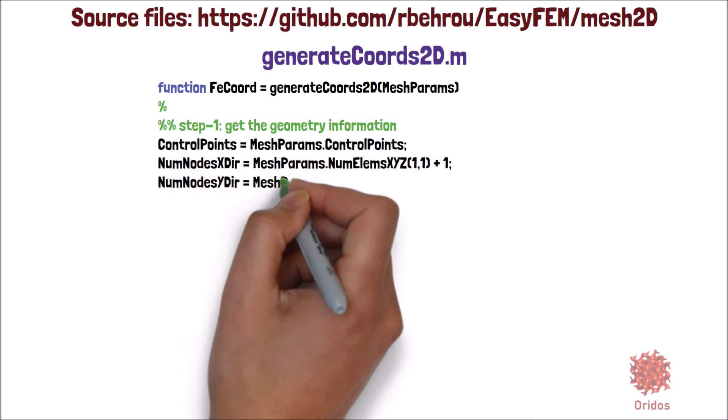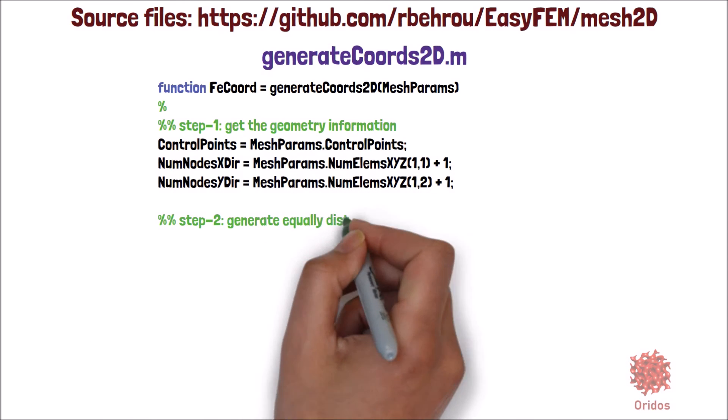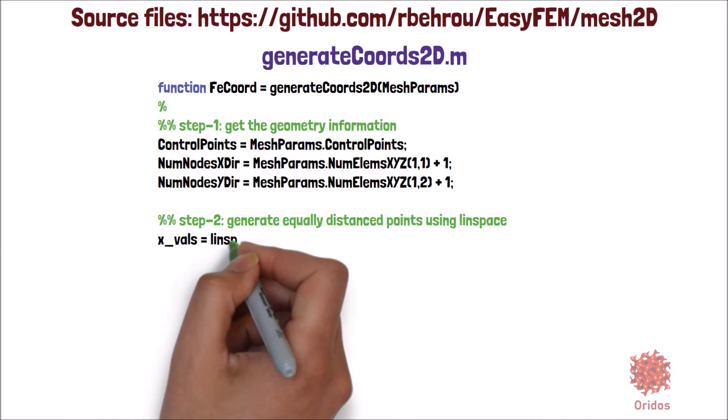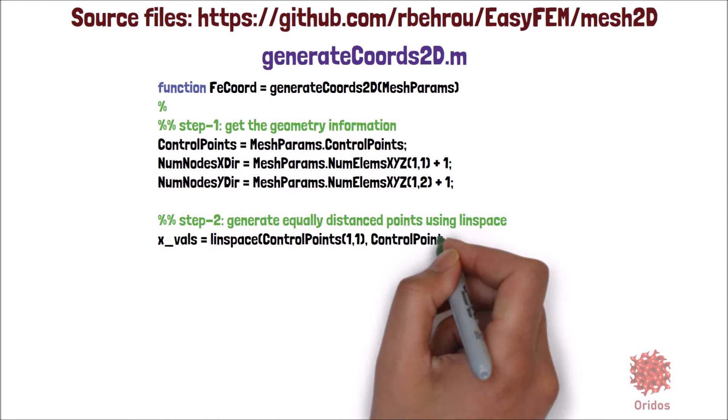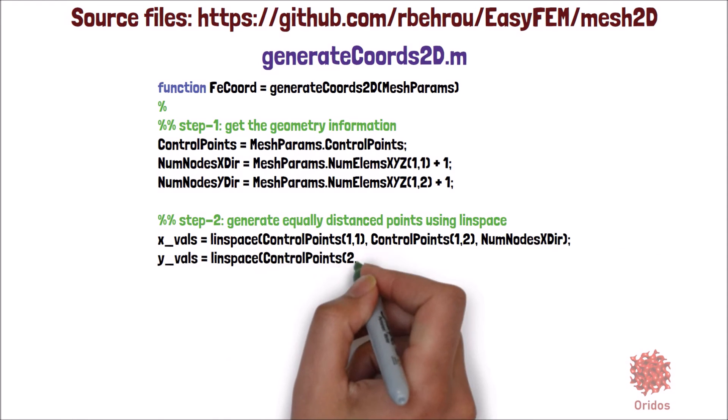Then, we initialize the number of nodes in each direction, which will be the number of elements plus one. We use MATLAB linspace function in step two to generate equally distanced points.